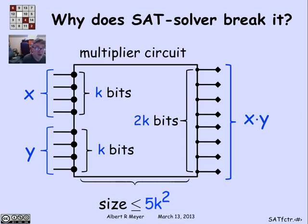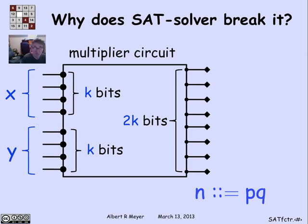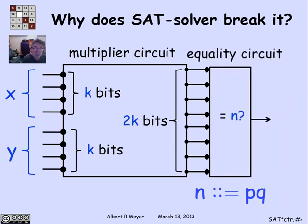Suppose we have a way to test satisfiability of circuits. How are we going to use this multiplier circuit to factor? The number we're factoring is n, and it's the product of 2 primes p and q — the kinds of n's used in RSA. It's very easy to design an n-tester: a little digital circuit that has 2k input lines and produces a 1 on its output line precisely when the input is the binary representation of n. We attach this equality tester, which produces output 1 for n and 0 for anything else. That's another trivial circuit to build. So we put those two together.